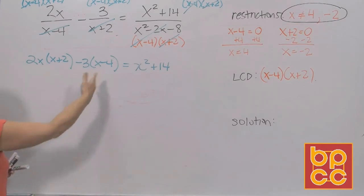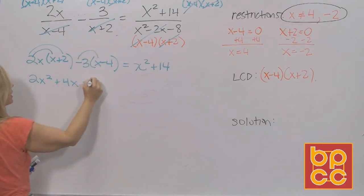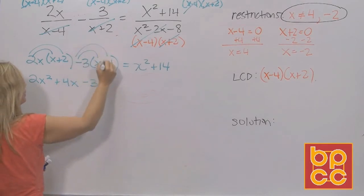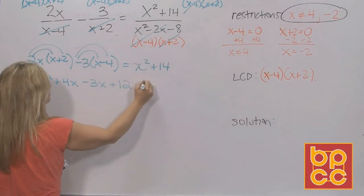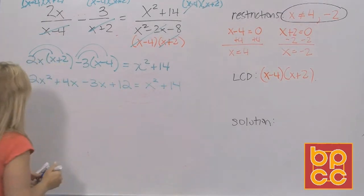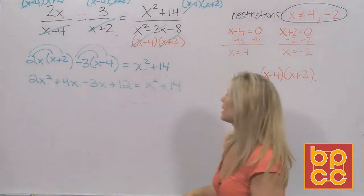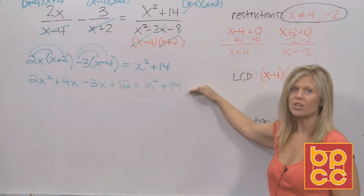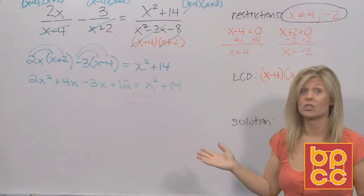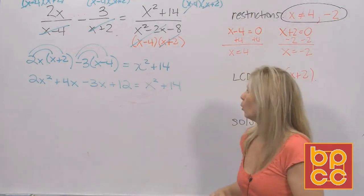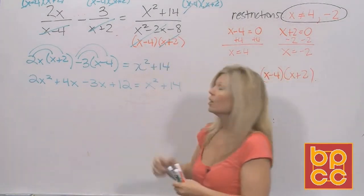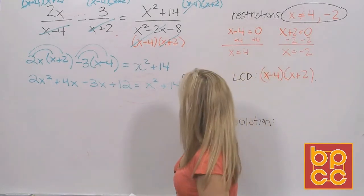Now, if we look, we've got to get rid of the parentheses. So we're going to distribute. So we get 2x squared plus 4x. We're going to distribute negative 3x plus 12 equals x squared plus 14. And we take a step back and we say, hmm, what kind of equation is this now? Because we got rid of the fractions. It's no longer rational. Well, it's got an x squared and an x squared. So hey, this is a quadratic.